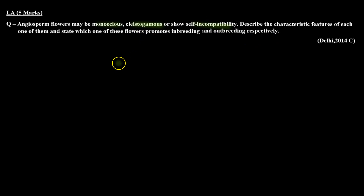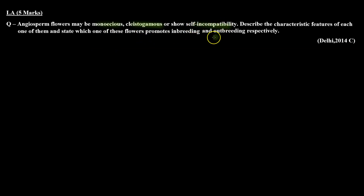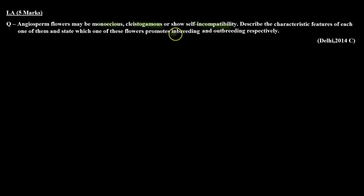This question states that angiosperm flowers can be monoecious, cleistogamous, or can show self-incompatibility. We need to know the characteristics of these three types of flowers and determine which promotes in-breeding and which promotes out-breeding.